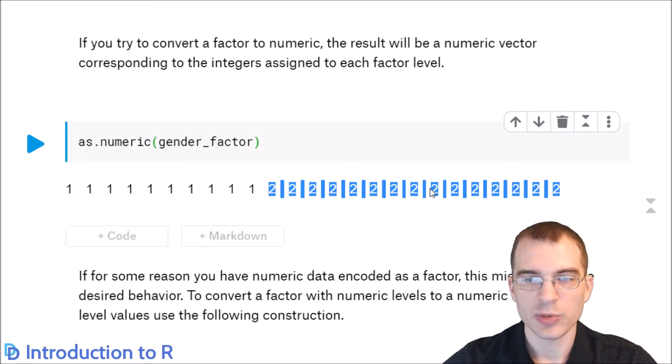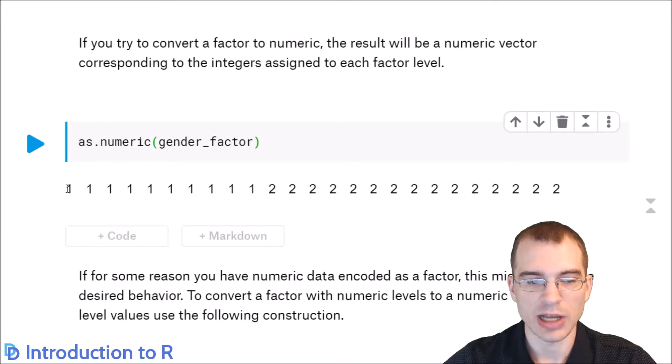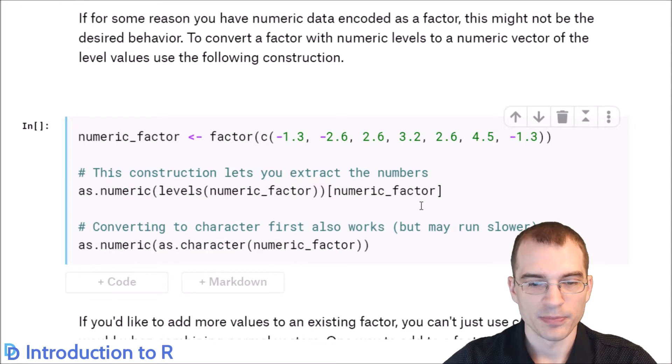So if you have numeric data in a factor and you actually want to get the numeric values out and not these indices, there's a couple of different ways you can do that. This code block is showing how to do that. So we're storing a factor with some numeric values this time. And to get those out, you can use this construction. You basically take the levels, you convert that to numeric, and then you use the original factor itself as an index. And that will allow you to get those values back.